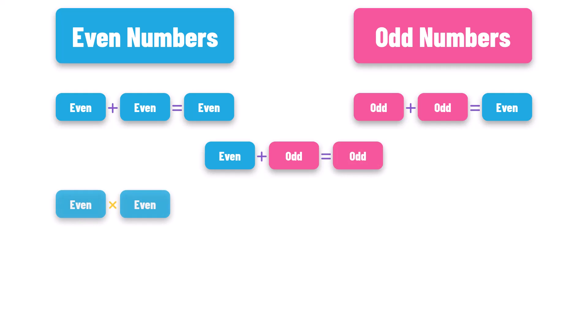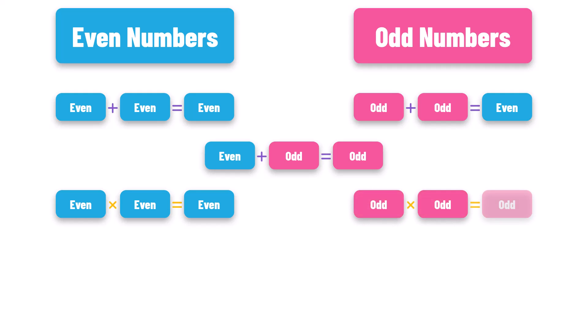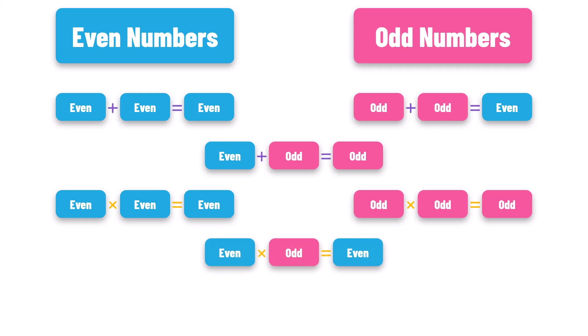If you multiply two even numbers, the result is always an even number. If you multiply two odd numbers, the result is always an odd number. If you multiply an even number and an odd number, the result is always an even number.